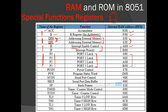Next is PCON, the power control register. It doesn't control the power of 8051 directly; rather, it is responsible for the speed of serial communication. It allows us to double the speed of serial communication when operating in normal mode. It also has some bits responsible for power control, but generally we don't use those bits. The address is 87H.